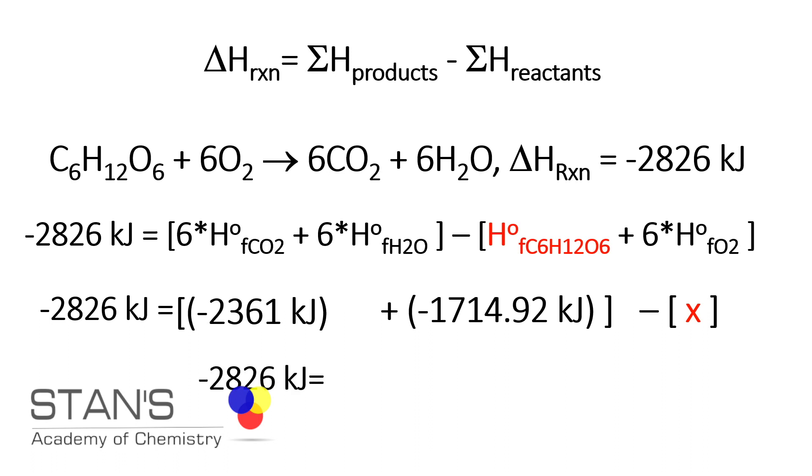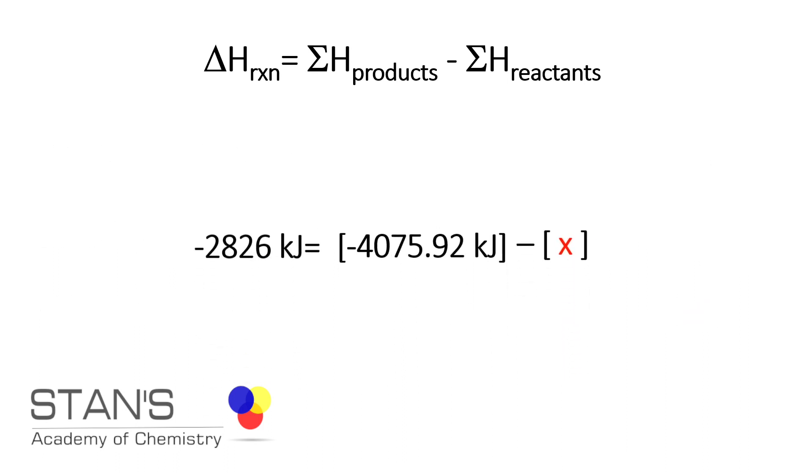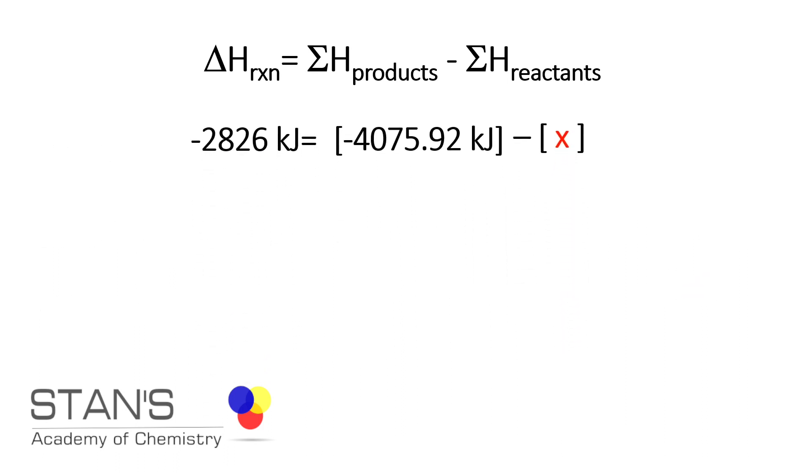Adding up the values in the bracket, negative 2826 equals negative 4075.92 kilojoules minus X. Rearranging, we can find out the enthalpy of formation of glucose. When you bring X to the left, the negative sign changes to a positive sign, and negative 2826 changes to positive 2826.